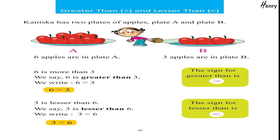Greater than and lesser than. Plate A and plate B. Six apples are in plate A; three apples are in plate B. Six is more than three — we say six is greater than three. We write: six greater than three. The sign for greater than is '>'.